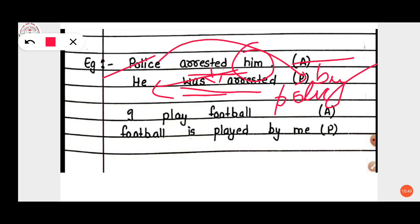Another example: 'I play football' in active voice. To change to passive voice, 'football' becomes the subject first, and 'I' changes to 'me.' The passive voice becomes: 'Football is played by me.'